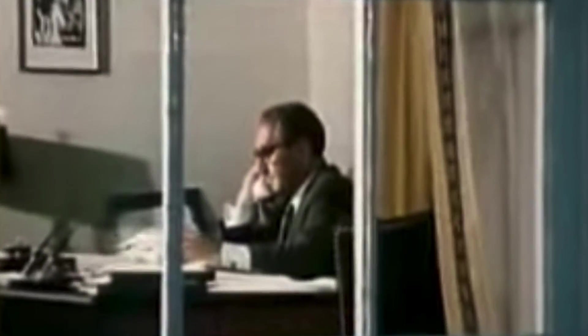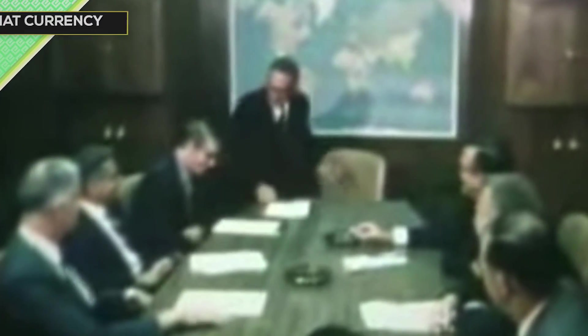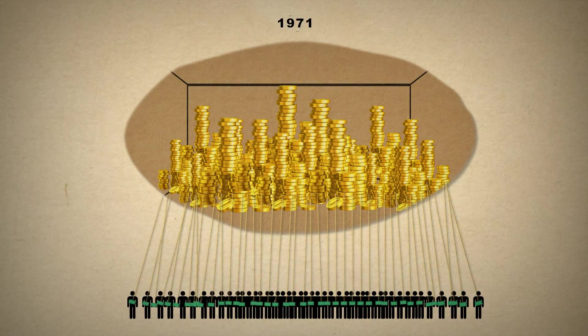To buy some time and avoid the whole system from complete collapse, in 1971 something very significant happened for the global economy. US President Nixon declared that from then on the US dollar would no longer be redeemable for gold: 'I have directed Secretary Connolly to suspend temporarily the convertibility of the dollar into gold.'